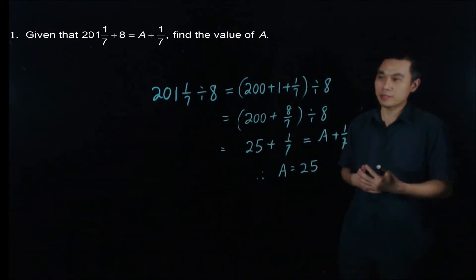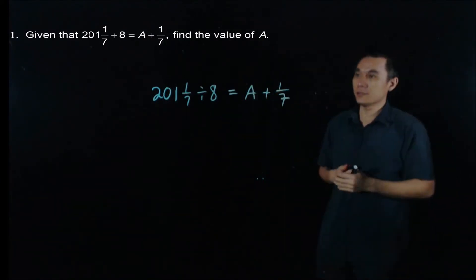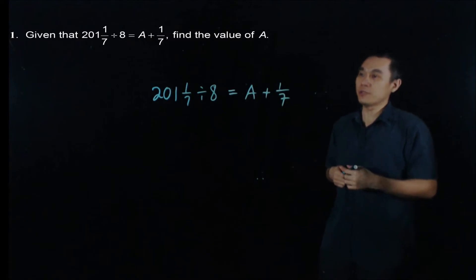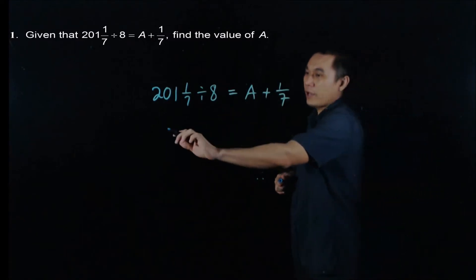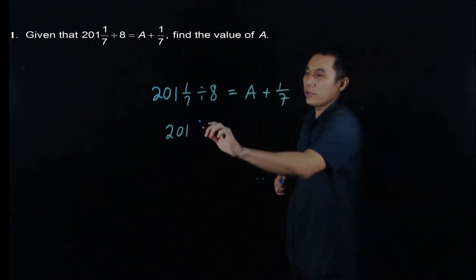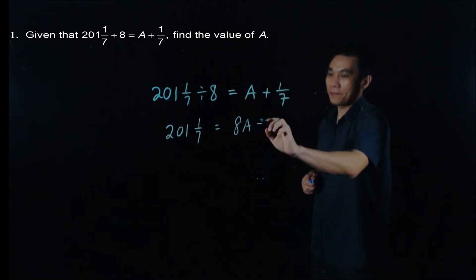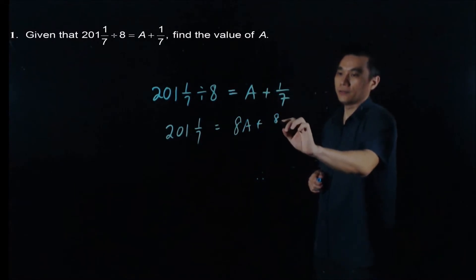I'll show you another method for this question. Given this equation is true, what we can do is we can multiply everything with 8. So it means that if this multiplied with 8, I have 201 1/7. If I multiply this with 8, I have 8A. And this is 8/7.